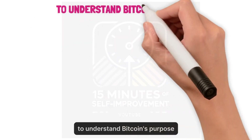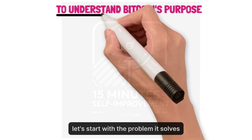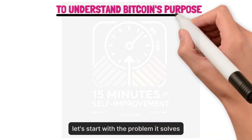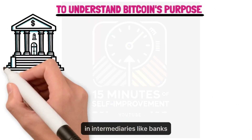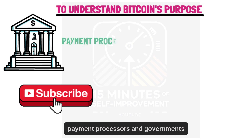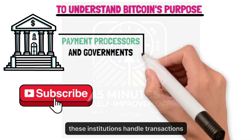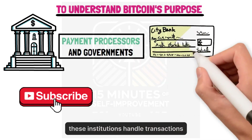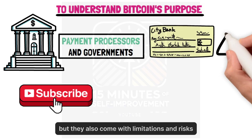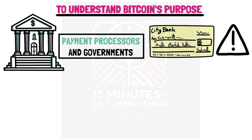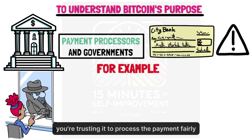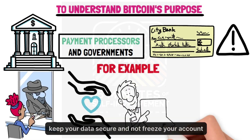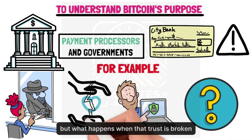To understand Bitcoin's purpose, let's start with the problem it solves. Traditional financial systems rely on trust in intermediaries like banks, payment processors, and governments. These institutions handle transactions, but they also come with limitations and risks. For example, when you send money through a bank, you're trusting it to process the payment fairly, keep your data secure, and not freeze your account.